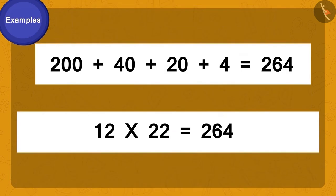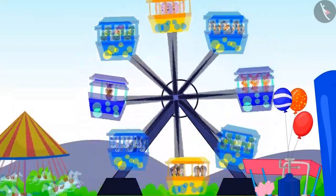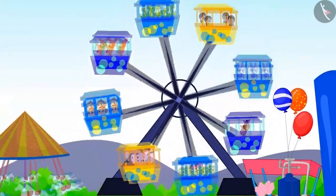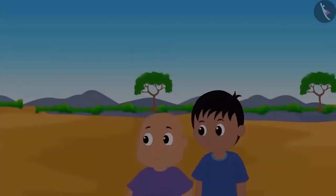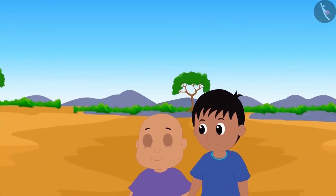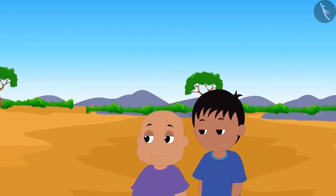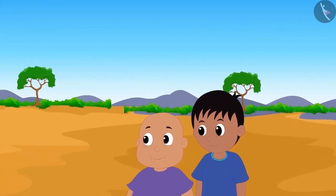Following this method, we got 12 times 22 is 264. A total of 264 people can sit in the ferris wheel in a day. While going around the fair, Raju and Bablu stopped at the game stall, which had the balloon-busting game.